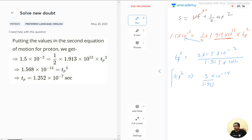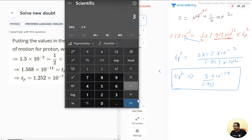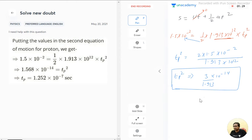Now we need to actually take the root of this, but before that I am dividing. 3 divided by 1.913, on dividing this we get 1.568. So this is 1.568 into 10 raise to the power minus 14.